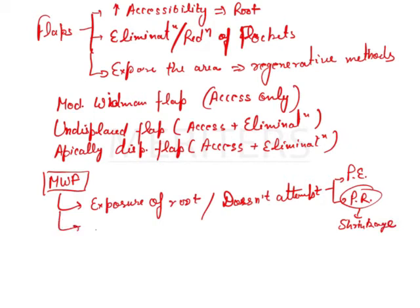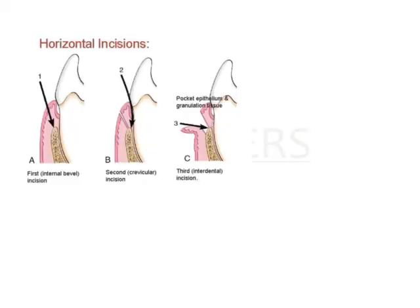Another thing that occurs in this technique is removal of the pocket lining. There are three incisions used in the Modified Widman Flap. The first is the internal bevel incision, also called the reverse bevel incision, where you give the first incision at a level 0.5 to 1 mm from the gingival margin. This distance is generally 0.5 to 1 mm with an internal bevel.